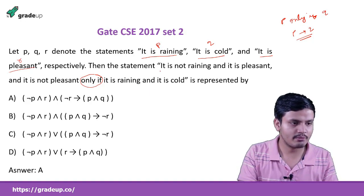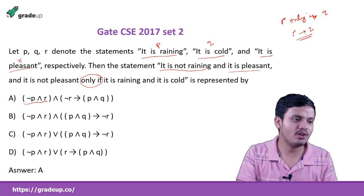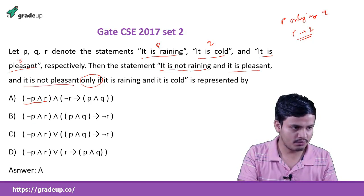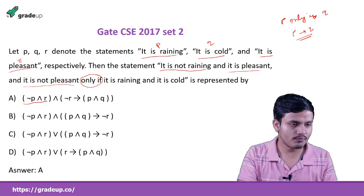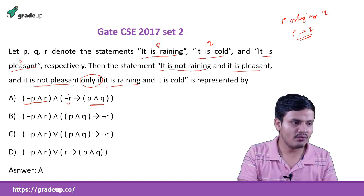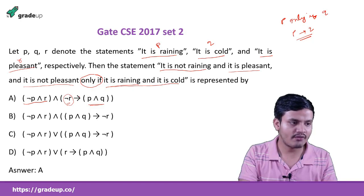Breaking down the statement: 'it is not raining' means not P, 'and it is pleasant' means R — this appears in all four options. Then 'it is not pleasant only if it is raining and it is cold' means not R implies P and Q. So option A matches: (not P and R) and (not R implies P and Q). Option A is correct.